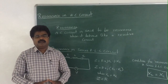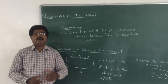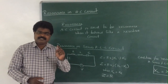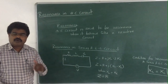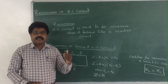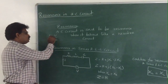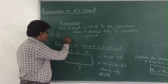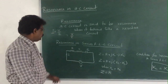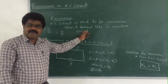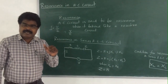When an AC circuit is at resonance, it behaves like a pure resistive circuit, so both current and voltage are in the same phase. The power factor is unity. Normally in an AC circuit the power factor is not unity — it may be leading or lagging, and below 1. But at resonance the power factor is unity.